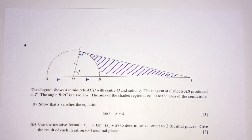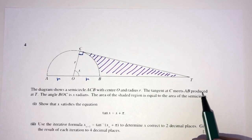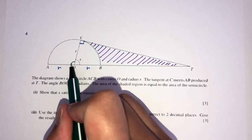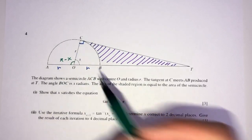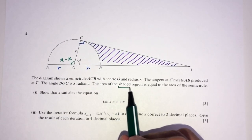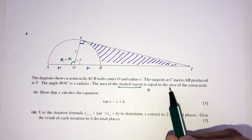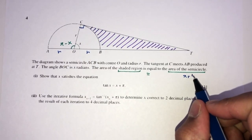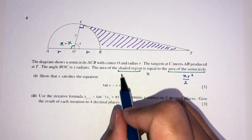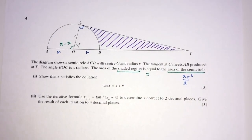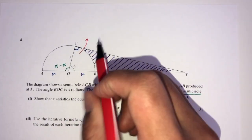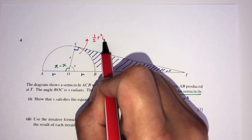AB produced meets at T. The angle BOC is x, which means angle AOC will be π minus x. The area of the region equals the area of the semicircle. The area of a semicircle is πR²/2. The area of the shaded region is the area of the triangle minus the area of the sector, which is ½R²θ for the sector.